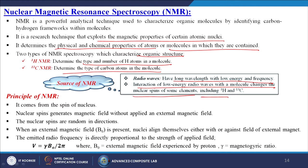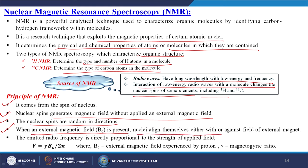The principles of NMR come from the spin of the nucleus. Nuclear spins generate a magnetic field, and without an external magnetic field, the nuclear spins are random in direction. When an external magnetic field B0 is present, nuclei align themselves either with or against the field. The emitted radio frequency is directly proportional to the strength of the applied field: ν = γB0 / 2π, where B0 is the external magnetic field experienced by the proton and γ is the magnetogyric ratio.